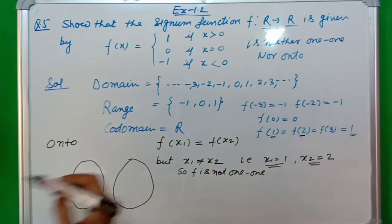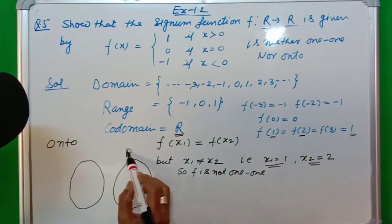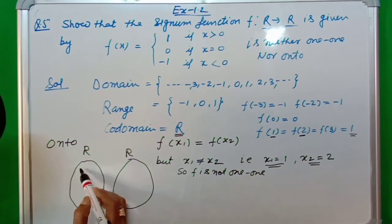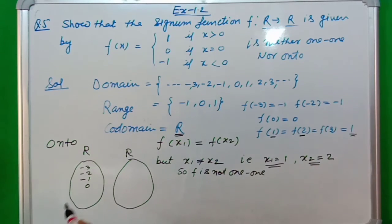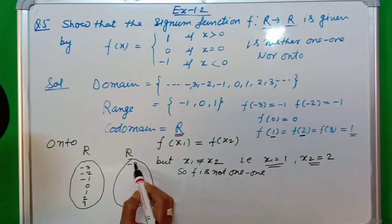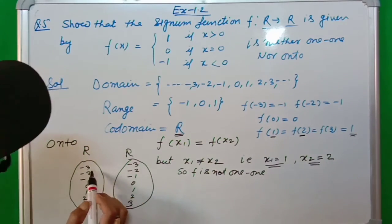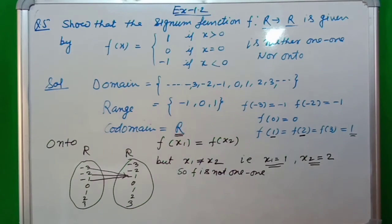For onto, you draw this diagram. Now see, the codomain is real numbers. Here the codomain is real numbers. If we take numbers, suppose we take minus 3, minus 2, minus 1, 0, 1, 2, 3. On this side, we have minus 1, 0, and plus 1.